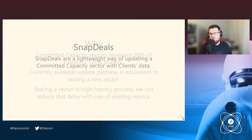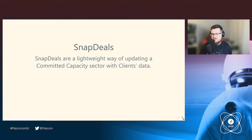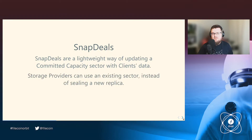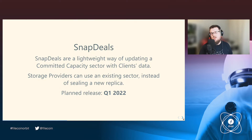So, what are SnapDeals? SnapDeals are a lightweight way of updating a committed capacity sector with clients' data. We leverage existing properties of a committed capacity sector and use it to create a sector with clients' data. Storage providers can use an existing sector instead of sealing a new replica, which is a property that we were looking for since we launched Filecoin a year ago. The plan of release for this feature is Q1 2022.